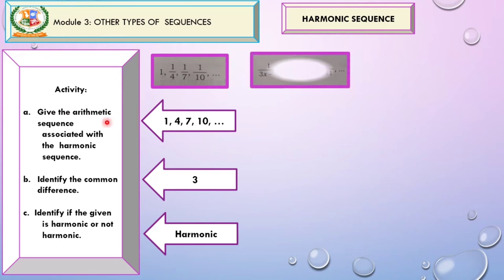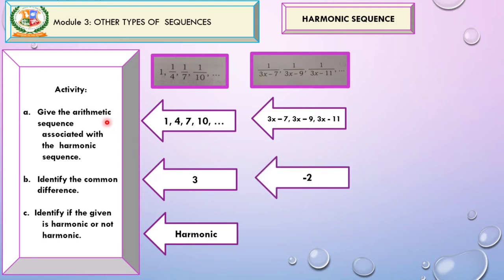For example number 2, the same steps will be followed. First, find the reciprocal of the given, and then identify the common difference. So in this case, we have a common difference which is negative 2. If the given has a common difference, then the given is also harmonic.